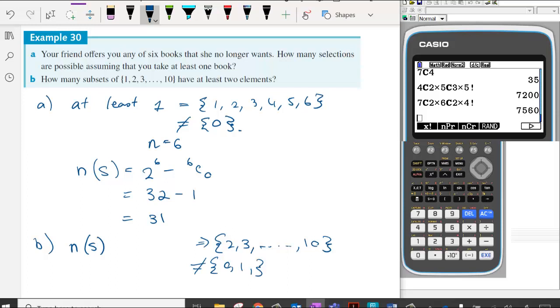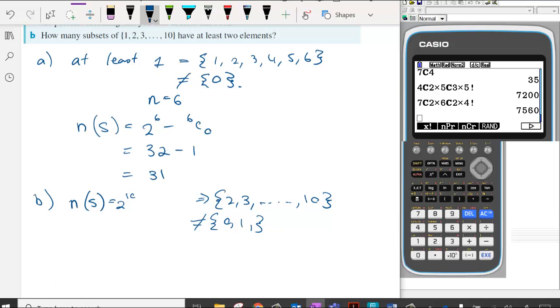So in this case it will be 2 to the power of 10, subtract 10C0, subtract 10C1. And so that means we have 1024, subtract 1, subtract 10. And we have 1013 different subsets that have at least two elements.